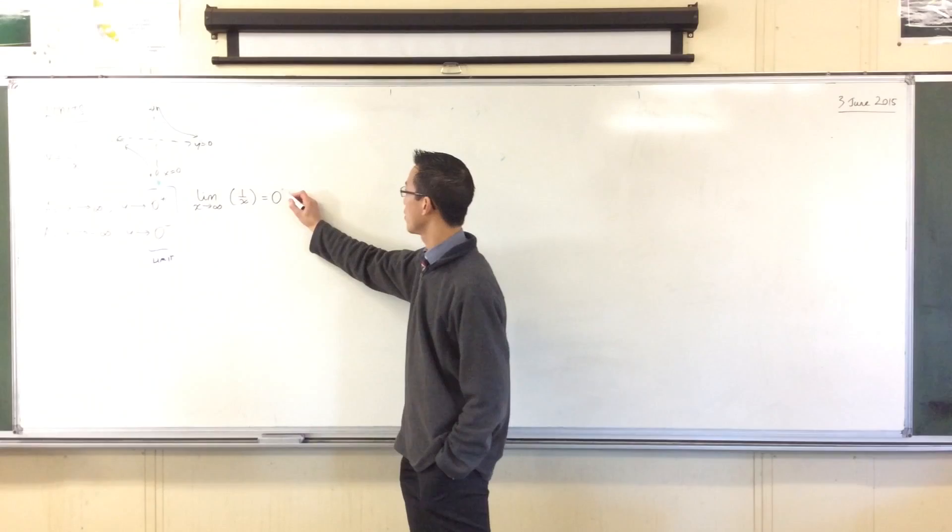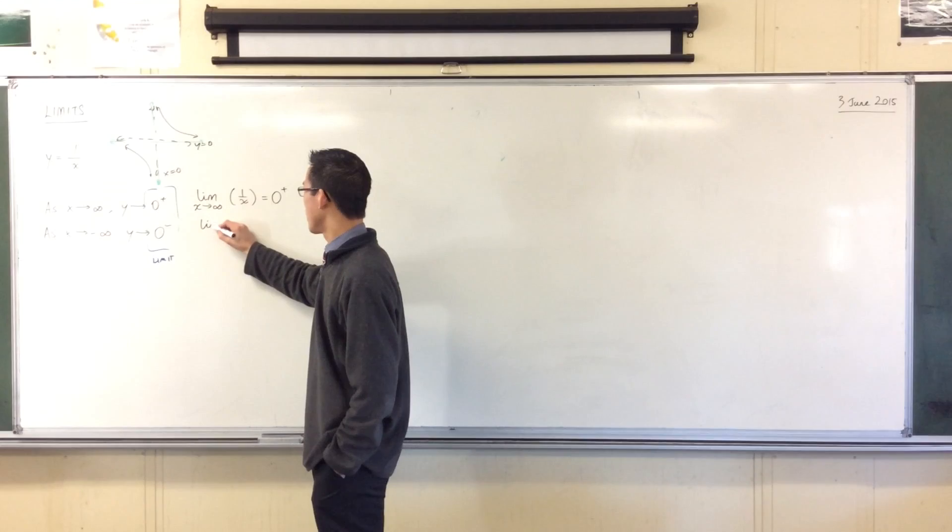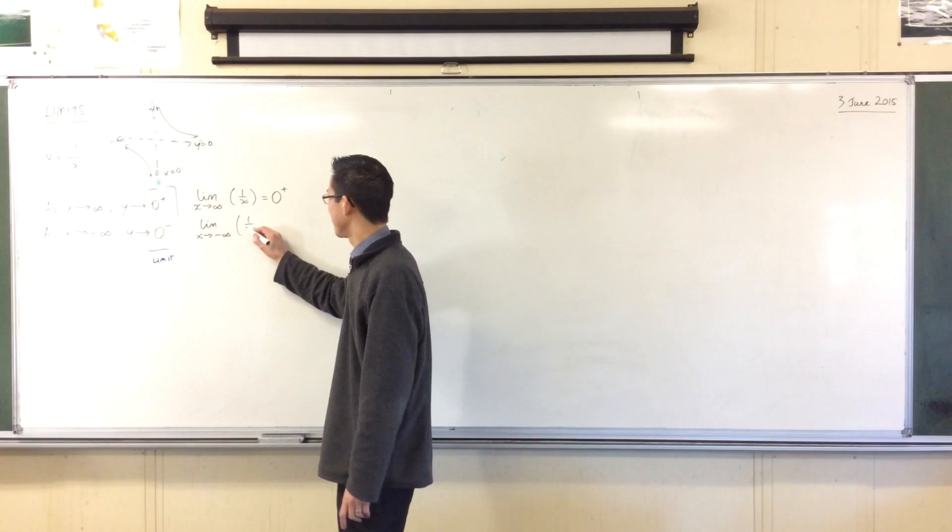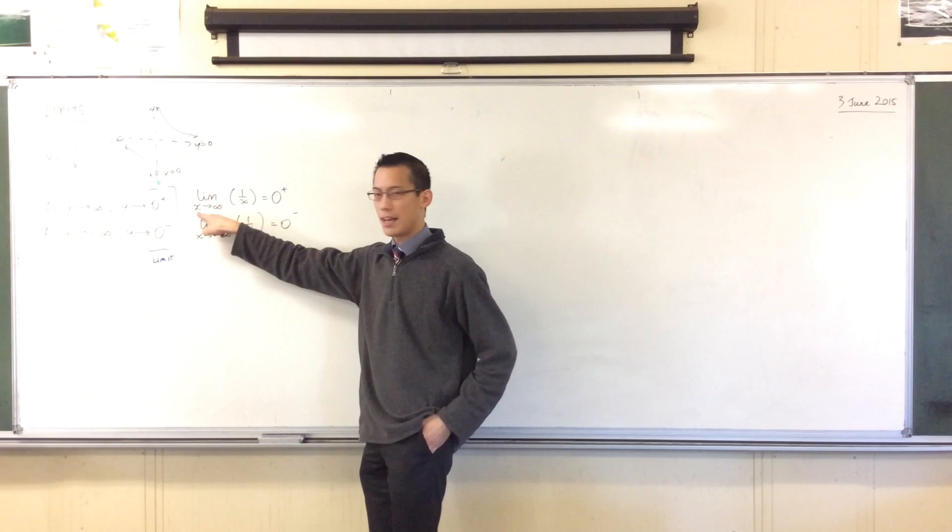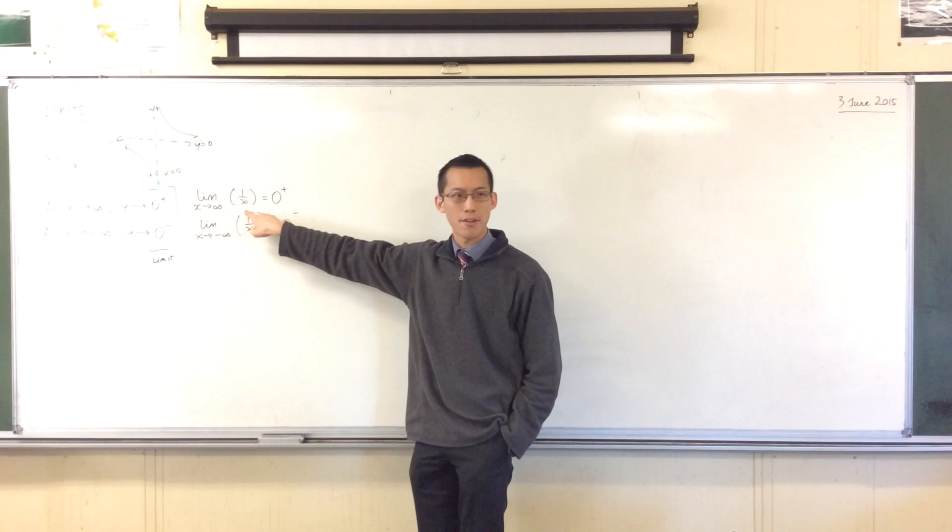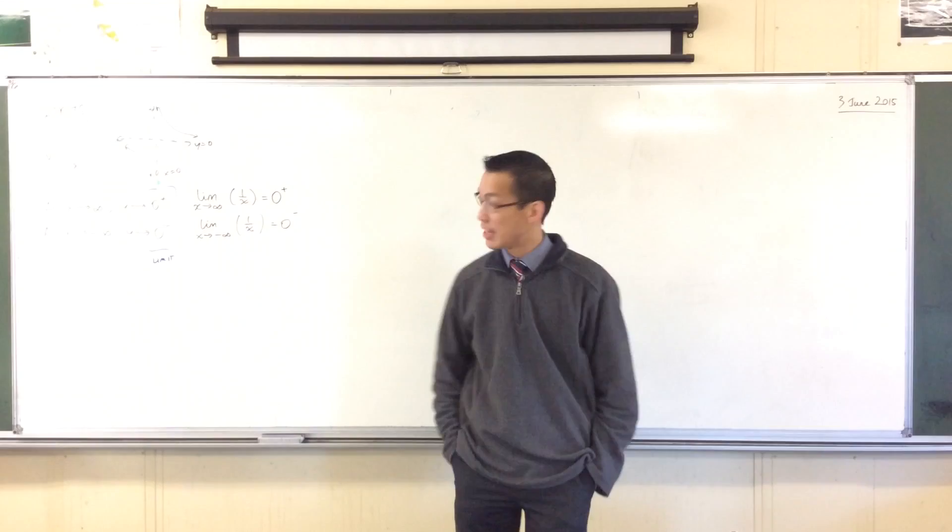In exactly the same way, the limit as x approaches negative infinity of the same thing, 1 over x, is still going to be 0, but it's from below. So I read this. Let me say this again. It's a little bit like logs with this funny way of actually saying the phrase. I read this as, the limit as x approaches infinity of 1 over x is 0 from above.